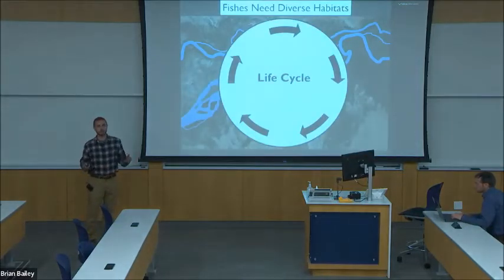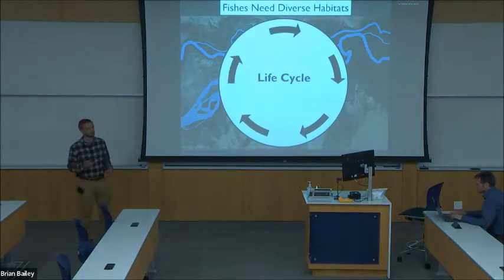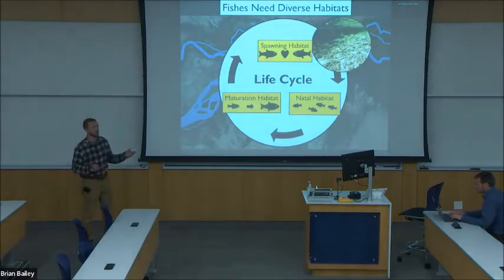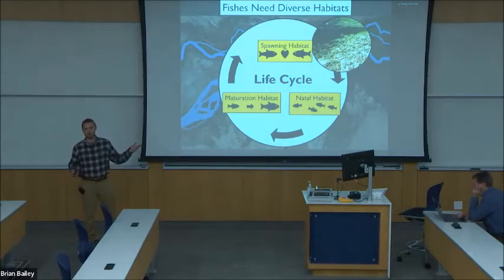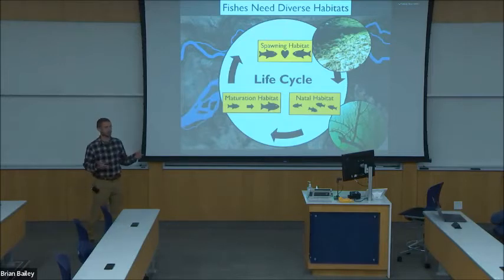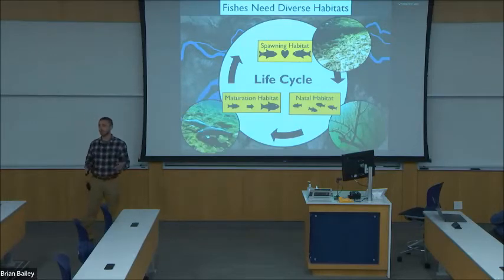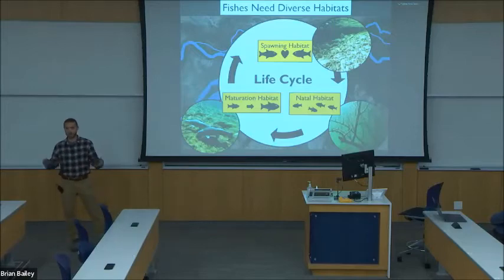Habitat loss and degradation has been a major driver of this decline in freshwater biodiversity. Habitat is important for fishes because fishes need access to diverse complementary habitats in which to complete their life cycles. For example, fish need suitable habitat in which to spawn, which may be a clean gravel substrate for some species. Young fish also need suitable habitat to survive, such as submerged wood that provides low-velocity habitat. Some adults also need suitable habitat in which to feed, grow, reach sexual maturity, and complete their life cycle.